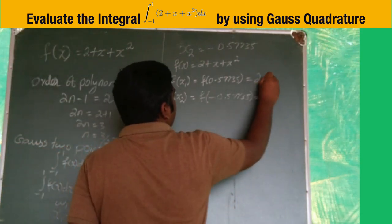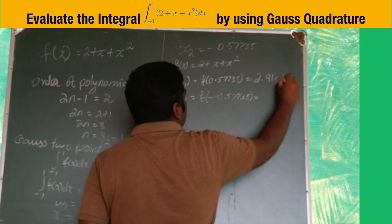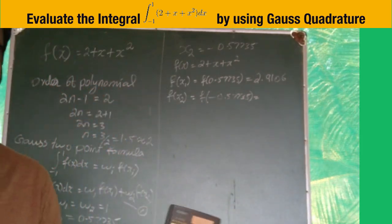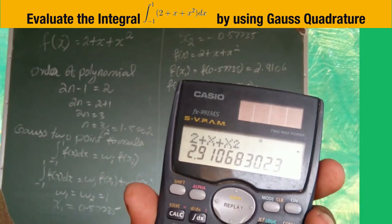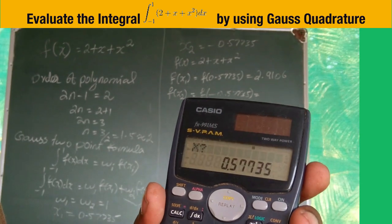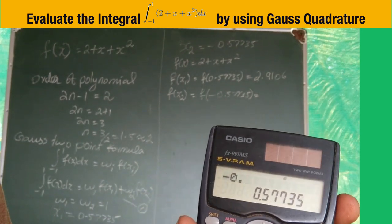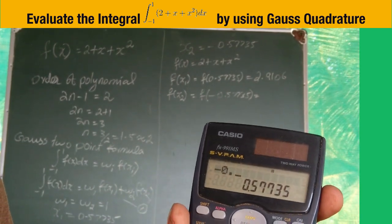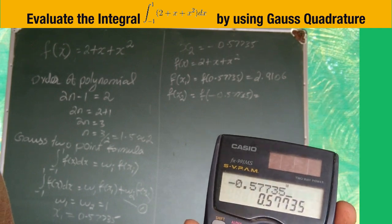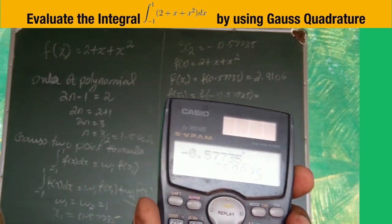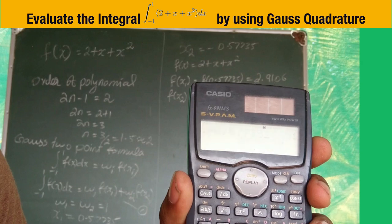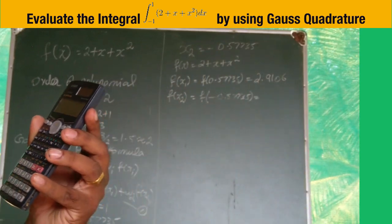Next, press CALC button for x2 = -0.57735, then press equal to. You get 1.7559.